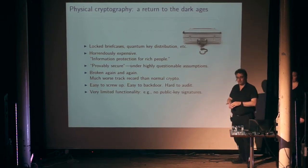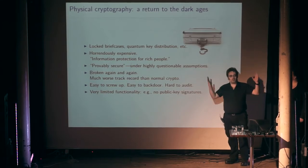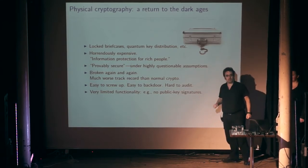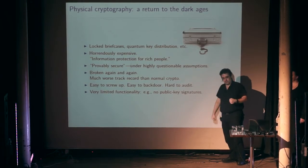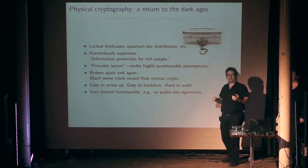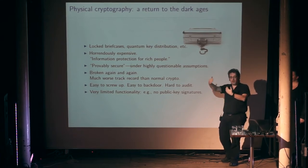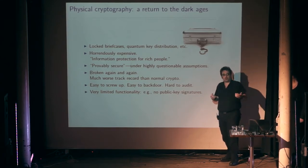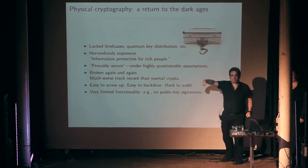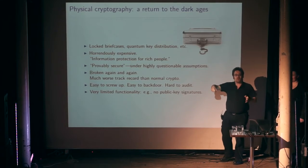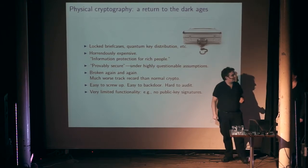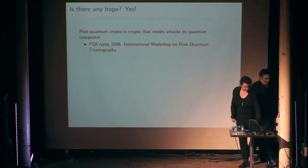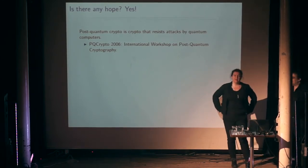Finally, even if physical cryptography did everything it was supposed to, it still wouldn't do basic things we need like public key signatures. It only works if you've already set up some secret or trusted communication mechanism. It doesn't let you do things like operating system updates, where your computer checks a signature on a downloaded OS to verify it's valid. Imagine Microsoft sending out billions of couriers with locked briefcases for every OS update — it just doesn't work.